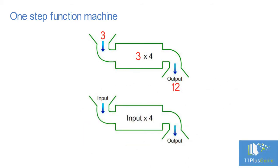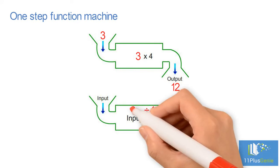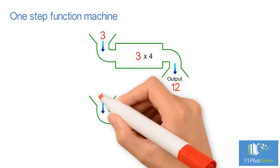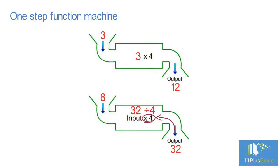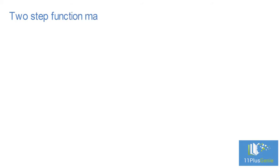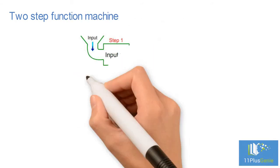Now suppose the output of the machine is 32. What was the input? Because we start with the output, we need to move backwards through the machine, doing the opposite. Instead of multiplying by 4, we divide by 4. 32 divided by 4 equals 8. The input was 8.